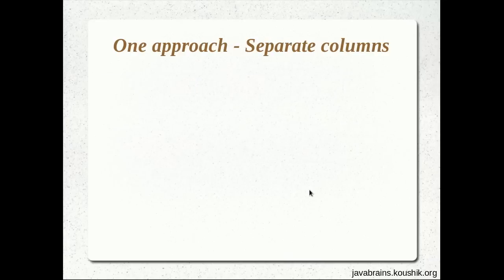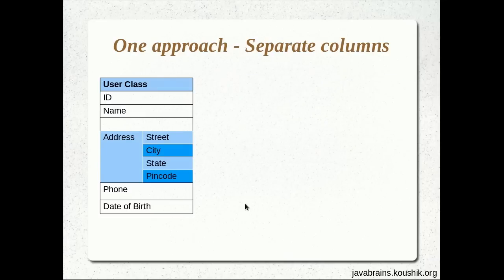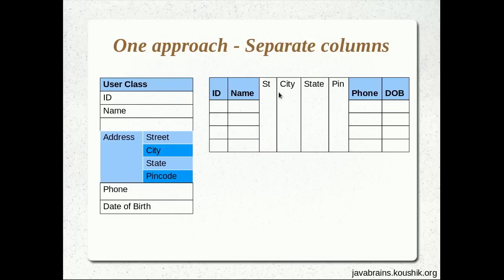So essentially we'll have separate columns — street as a column, city as a column, state as a column, and pin as a column. It's almost as if these member variables are member variables of the User class, not of a nested object. It's as if it's just one class with all these flat member variables. That's how we're going to represent this.